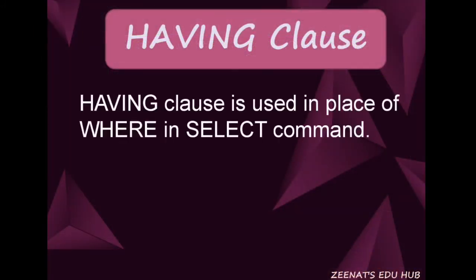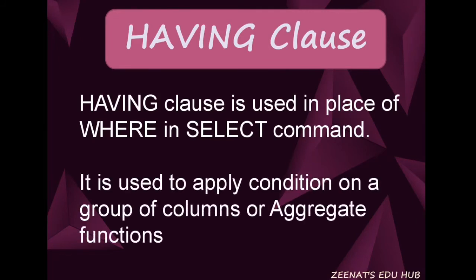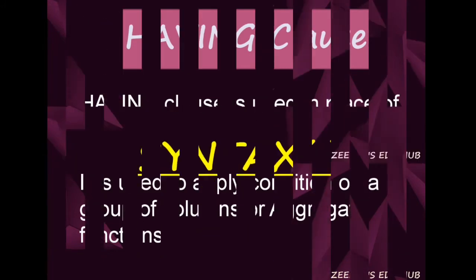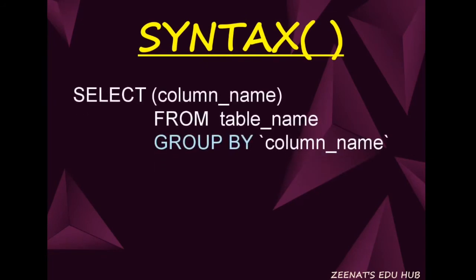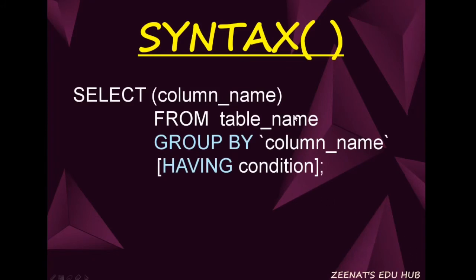Our next clause is the HAVING clause. It is used in the SELECT command in place of WHERE to give a condition on a group of columns or on an aggregate function. Its syntax is similar to the previous one — SELECT column_name FROM table_name GROUP BY column_name — except that HAVING condition is added if you want to display or group records on some specific condition. The condition is a boolean expression or an aggregate function.